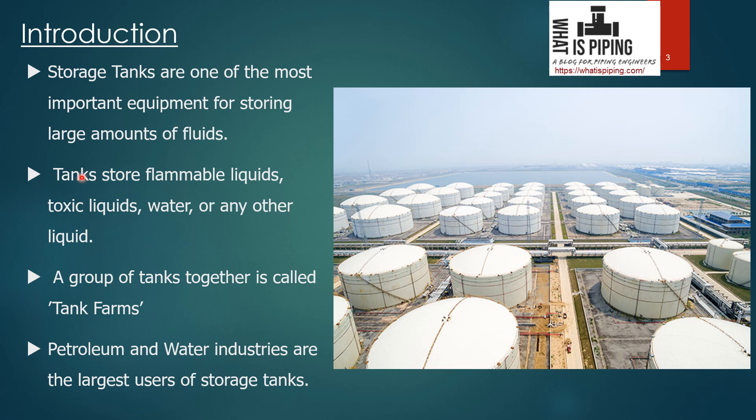Tanks store flammable liquids, toxic liquids, water, or any other liquid. The pressure is mainly atmospheric pressure, so no high pressure is applied for these tanks. A group of tanks together is called a tank farm — as you can see in this example image. Petroleum and water industries are the largest users of storage tanks, using a large number of storage tanks for storing purposes.